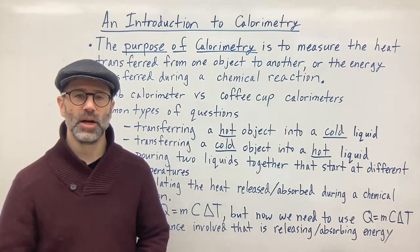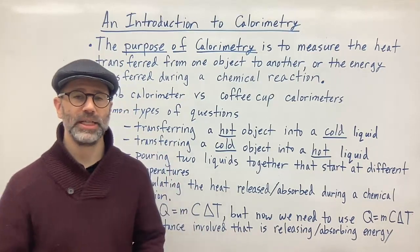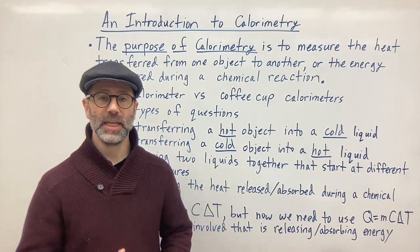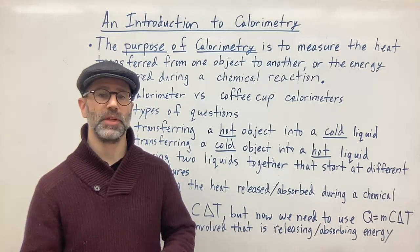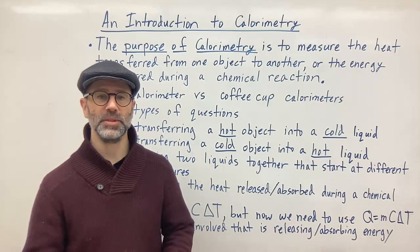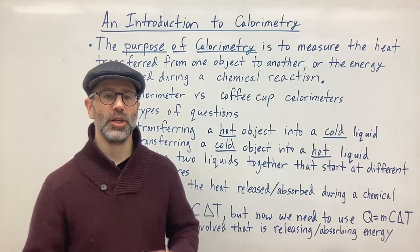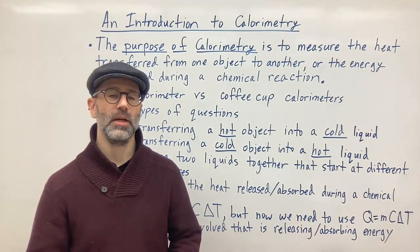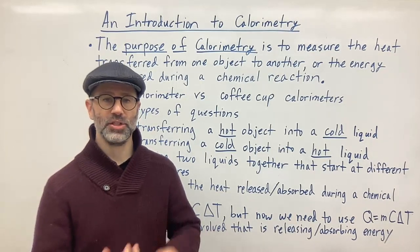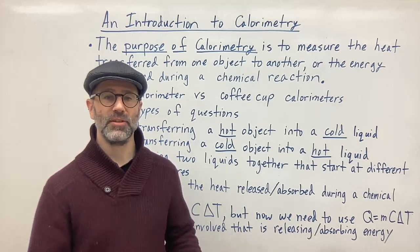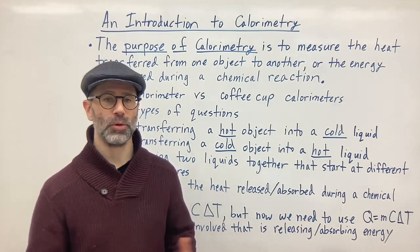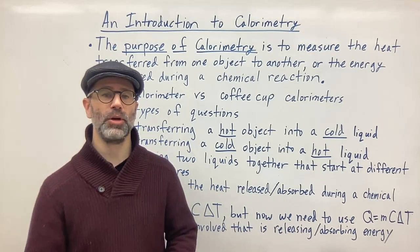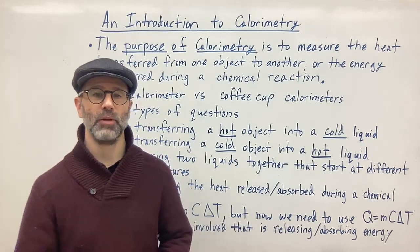In my previous video we were talking about the transfer of heat energy. We were talking about specific heat, the specific heat capacity of certain substances and how you can use Q equals the mass times the specific heat times the change in temperature in order to get the amount of heat or energy absorbed or released by an object. So we're going to continue that and use it for the purposes of calorimetry.